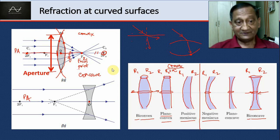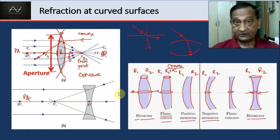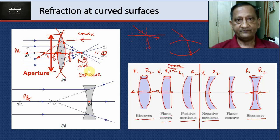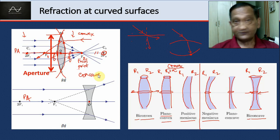In a lens there are two focal points: f2 on one side, and f1 on the other. f1 would occur if a ray came from the right-hand side parallel to the principal axis and, after two refractions, passed through that focal point. Is the focal length of f1 equal to that of f2? Yes — if the medium on both sides of the lens is the same, then the focal length of f1 equals that of f2; otherwise not.